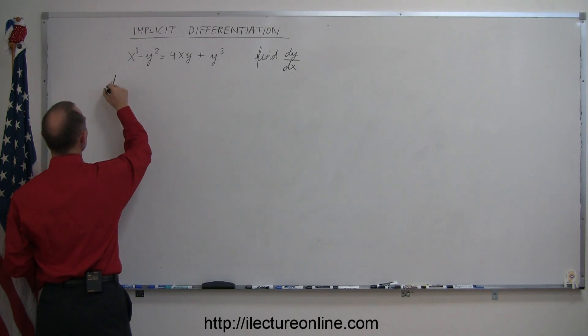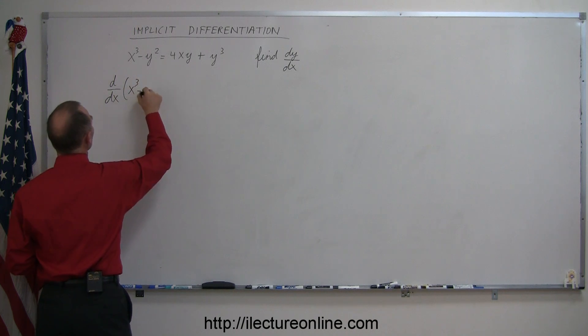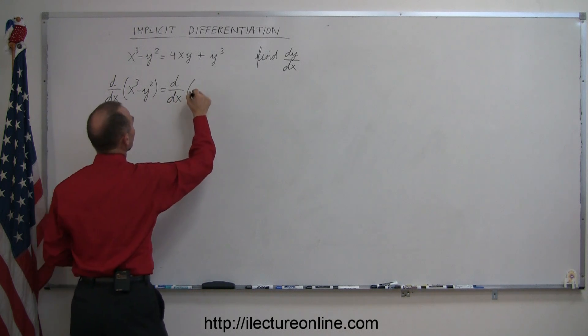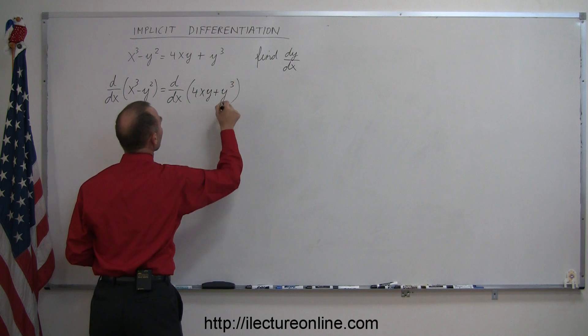We're going to take the derivative, the d/dx of the left side of the equation, which is x³ - y², equals the d/dx of the right side of the equation, 4xy + y³.